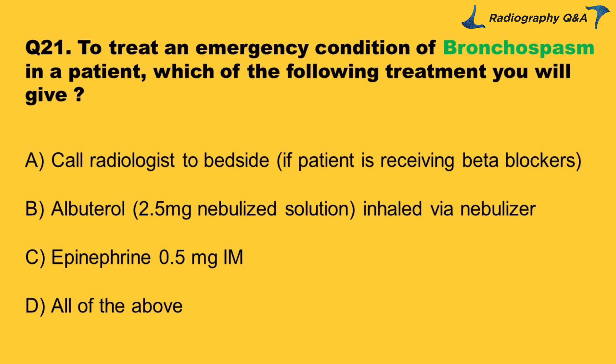Question 21: To treat the emergency condition of bronchospasm in a patient, which of the following treatments would you give? Option A: call radiologist to bedside if patient is receiving beta blockers. Option B: albuterol 2.5 mg nebulized solution inhaled via nebulizer. Option C: epinephrine 0.5 mg IM. Option D: all of the above. Right answer is Option D.